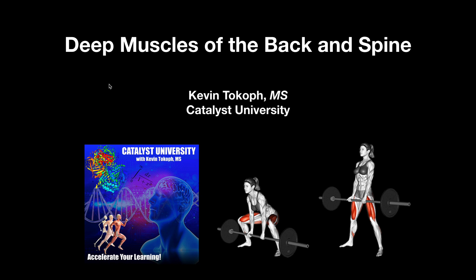The same thing goes for the muscles in the intermediate layer — those are not true back muscles even though they exist on the back. Those are going to be your serratus posterior superior and inferior; they only control movements of the ribs. Now we're going to look at the deep muscles of the back and the spine. These are the true back muscles because they perform movements or actions on the back and the spine.